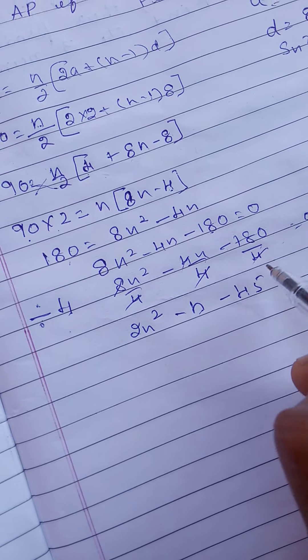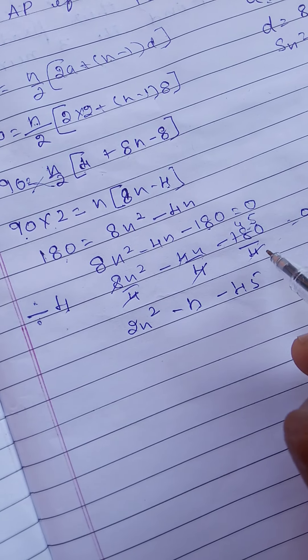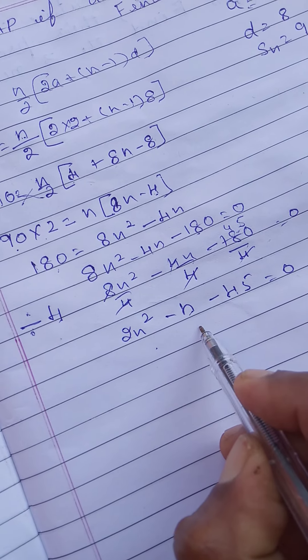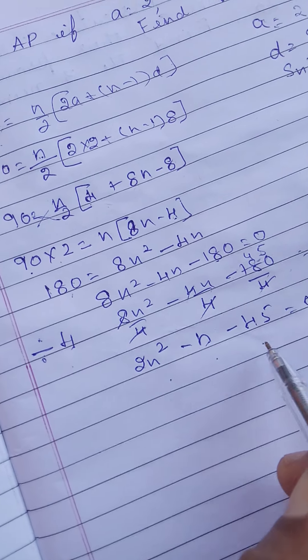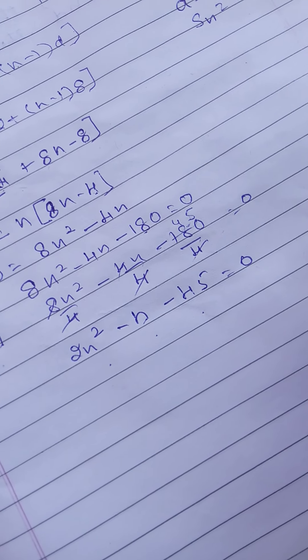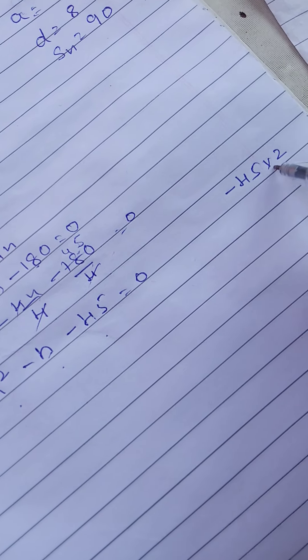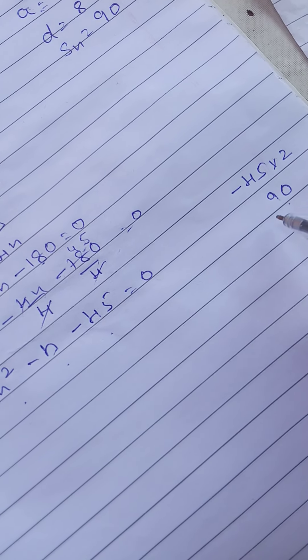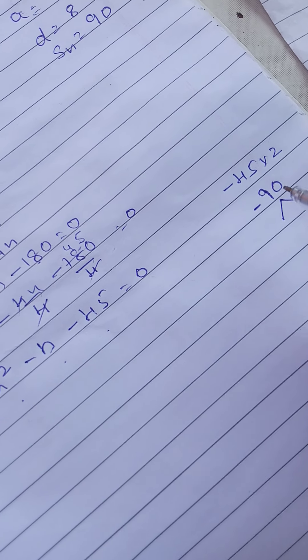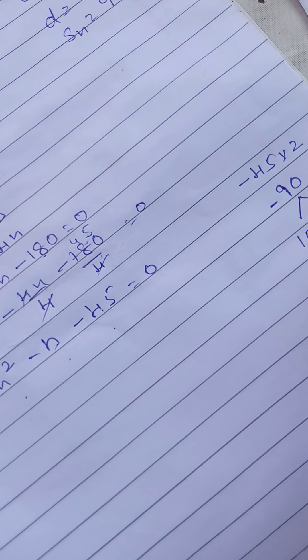4 into 4 is 16, 20 remaining, 4 into 5 is 20. So, 2n square minus n minus 45. Then we should solve this by factorize method. Minus 45 into 2 means 90. We should get the minus 90 by multiplying and minus 1 by adding. So, 10 into 9.